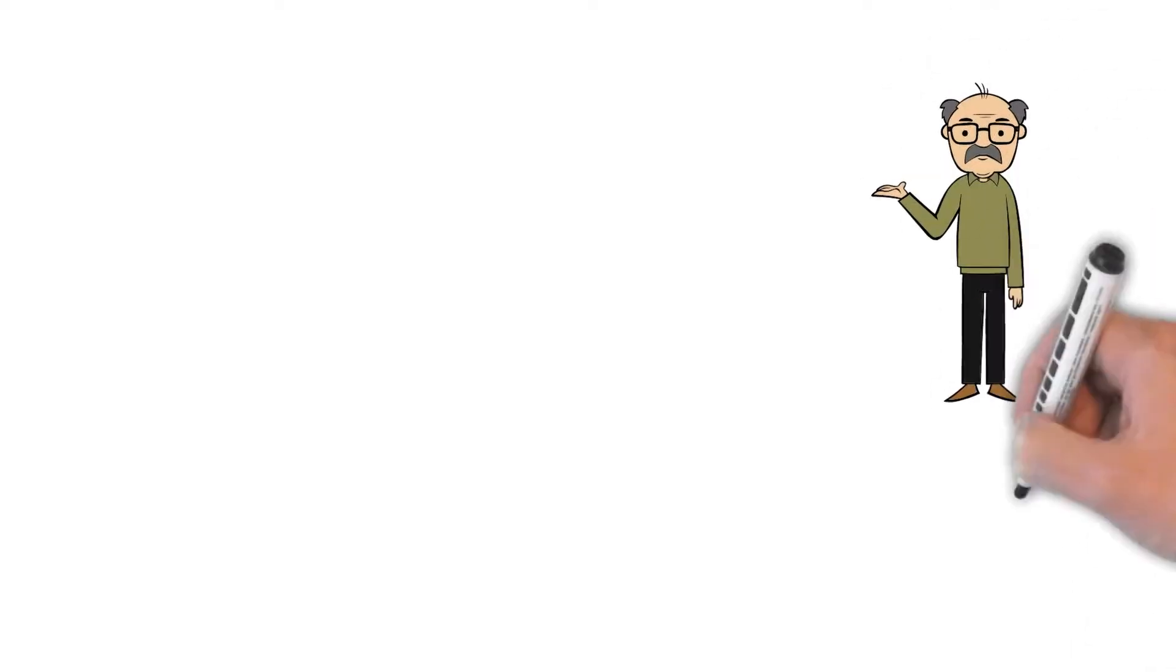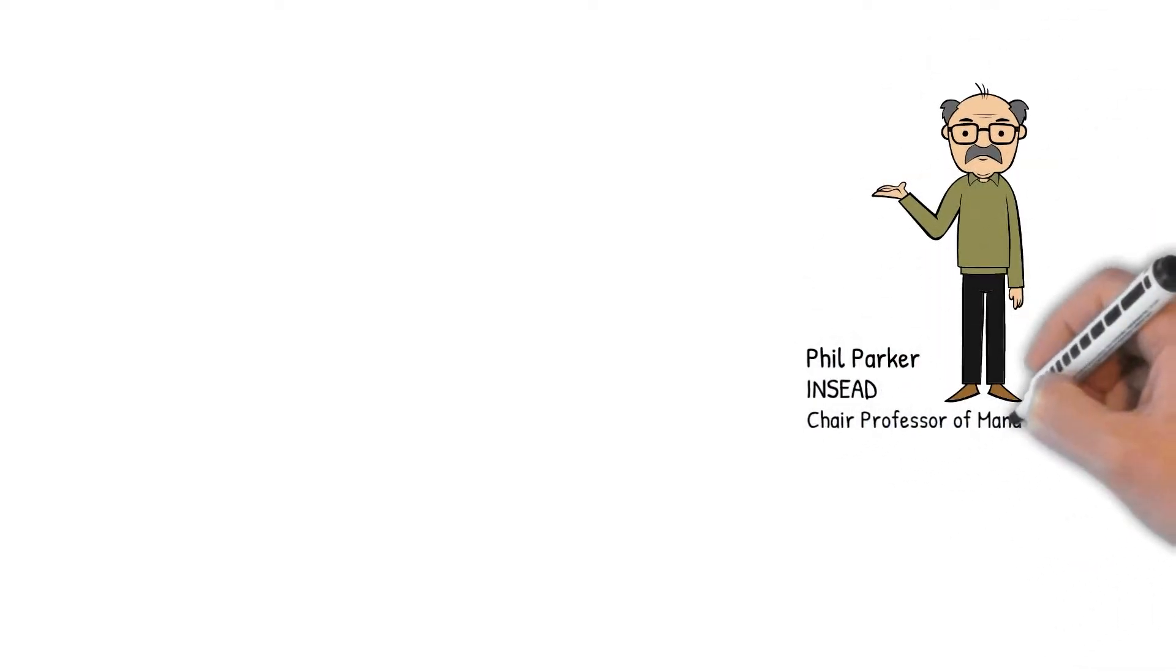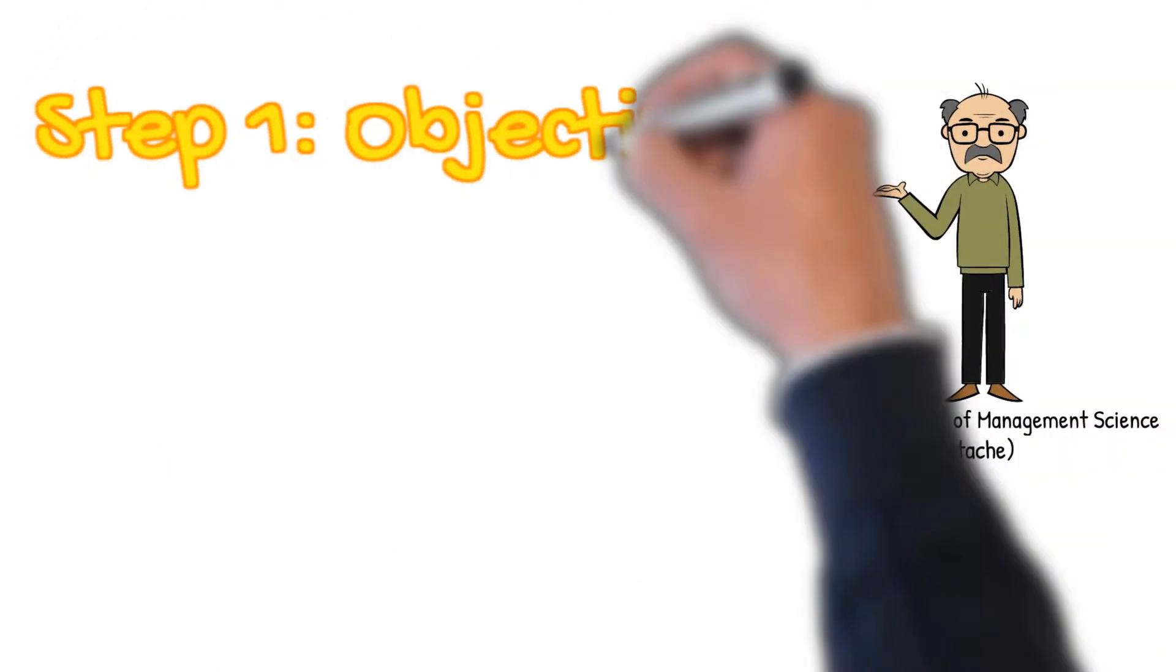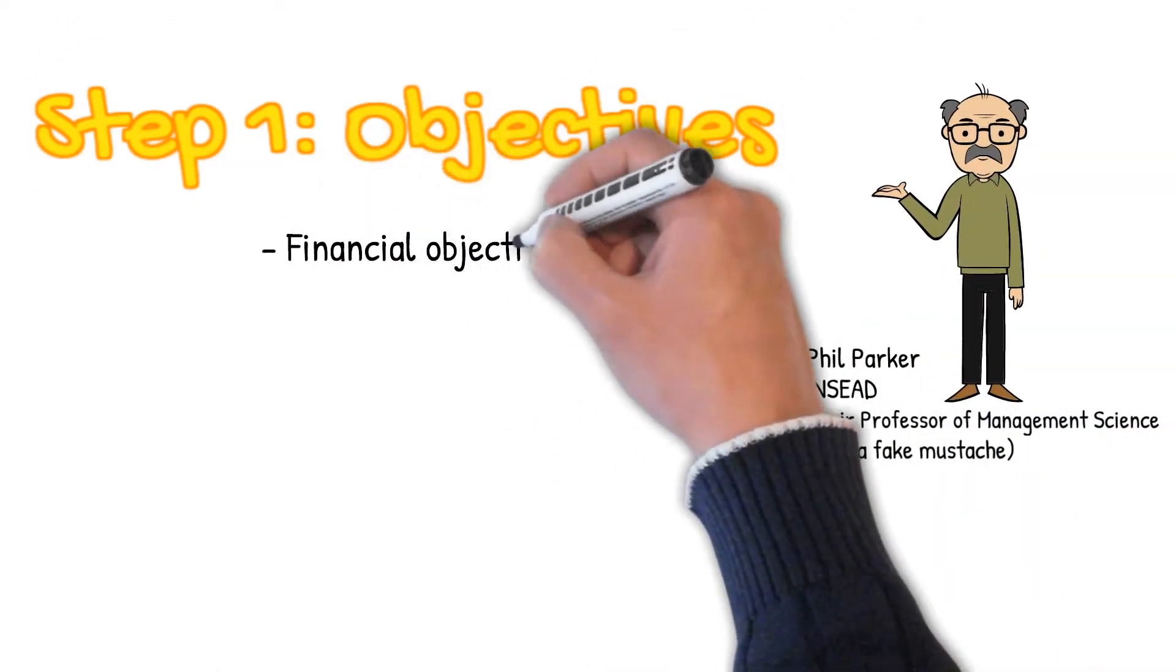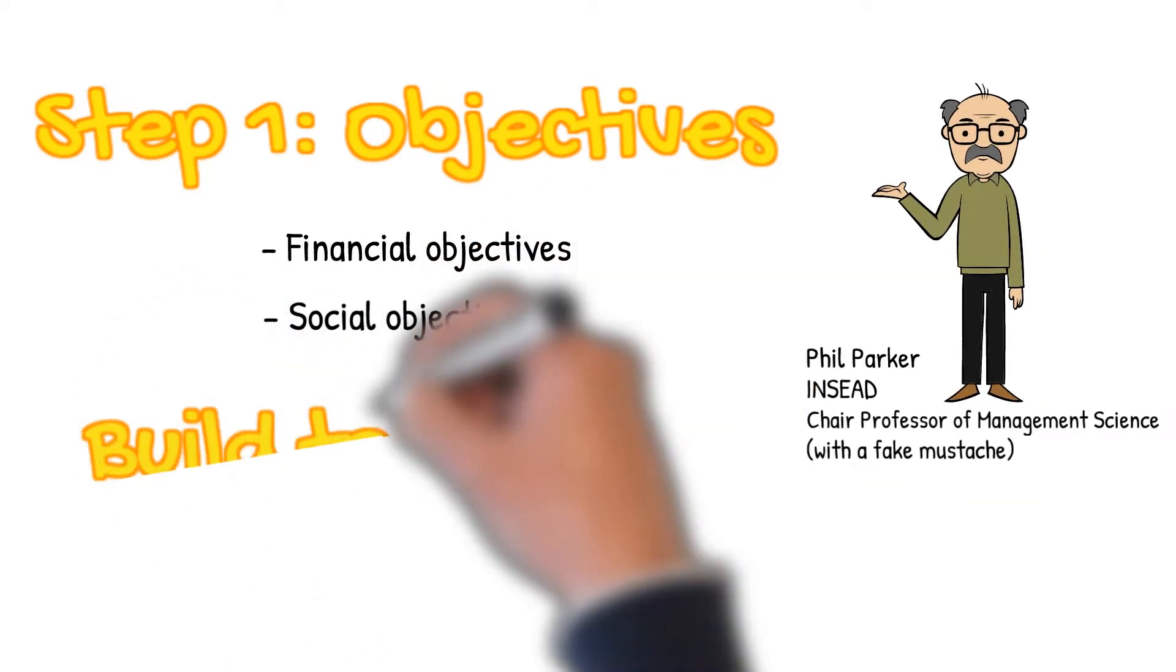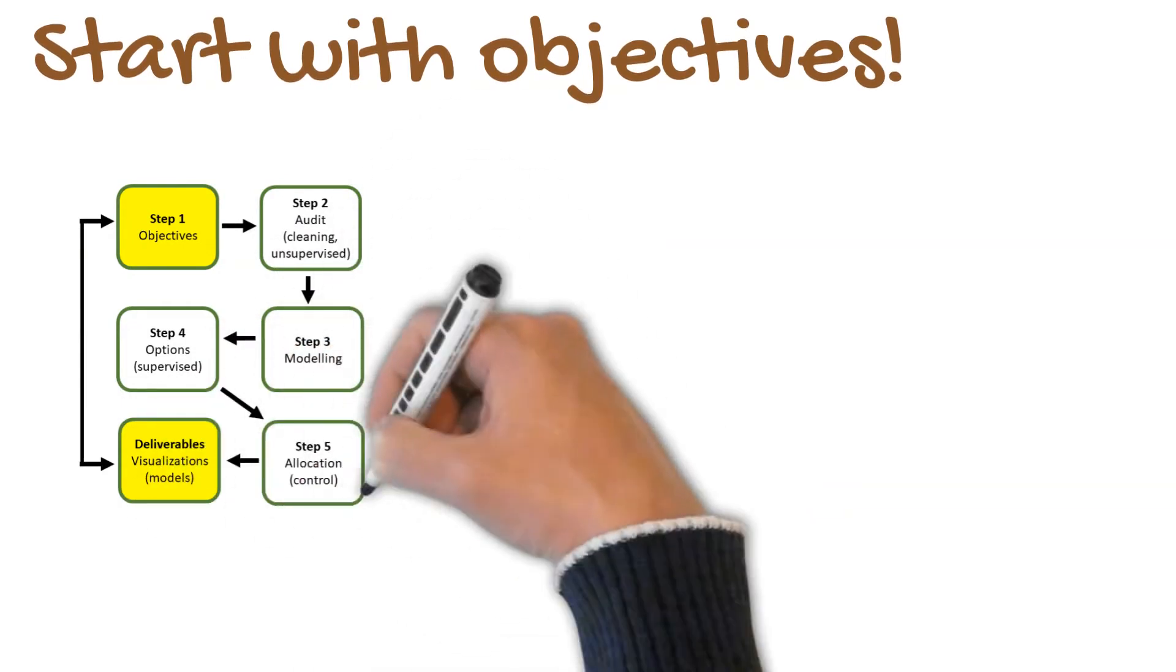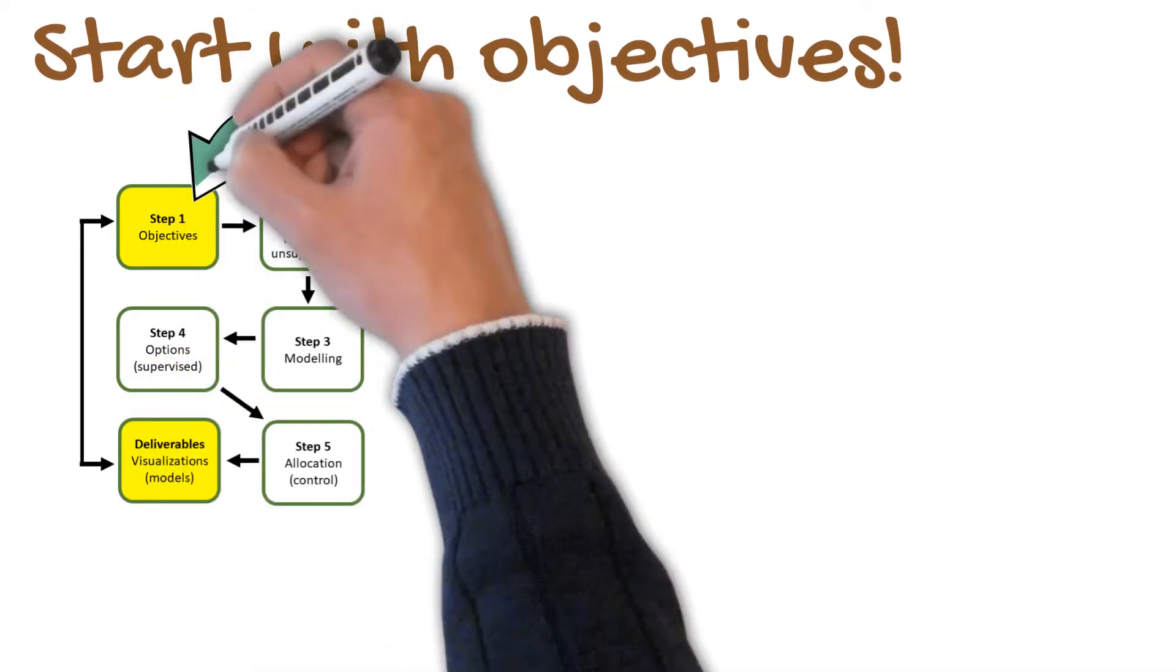Hello, my name is Phil Parker, and I'm about to introduce you to a series of six videos that describe how to do strategic planning in this field of artificial intelligence and machine learning. Step one is defining your objectives. Without any doubt, this is absolutely the most important step in strategic planning.